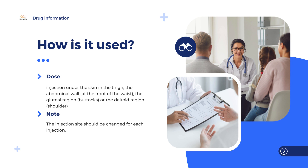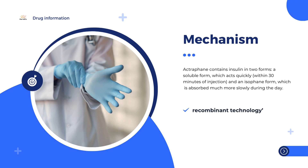The active substance in Actrophane, human insulin, is produced by a method known as recombinant technology. The insulin is made by yeast cells into which a gene (DNA) has been introduced, which makes them able to produce insulin. Actrophane contains insulin in two forms: a soluble form which acts quickly within 30 minutes of injection, and an isophane form which is absorbed much more slowly during the day, giving Actrophane a longer duration of action.